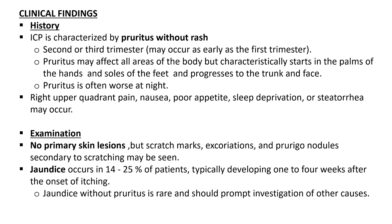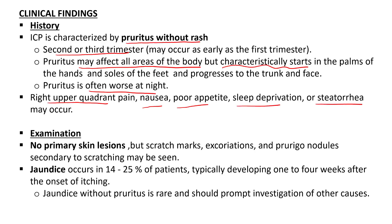Clinically, ICP is characterized by pruritus without rash, usually occurring in the late second or third trimester, though it may occur in the first trimester. It may affect all areas of the body, but characteristically starts in the palms of the hands and soles of the feet, and is often worse at night. Other symptoms include right upper quadrant pain, nausea, poor appetite, sleep deprivation, or steatorrhea. On examination, there are no primary skin lesions; however, scratch marks, excoriation, and prurigo nodules secondary to scratching may be seen. Jaundice occurs in 14 to 25% of patients, typically developing one to four weeks after onset.